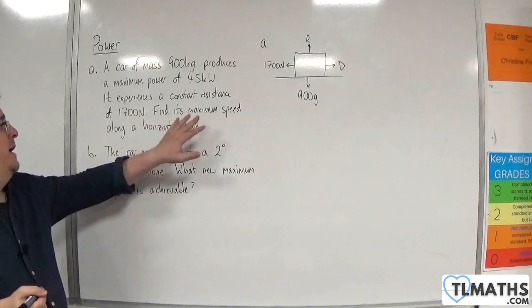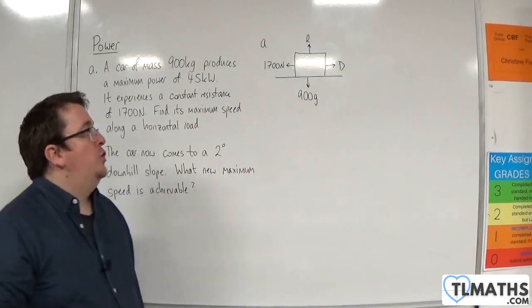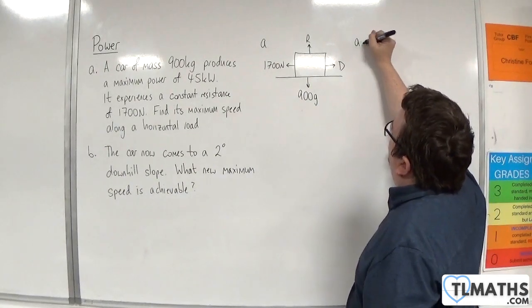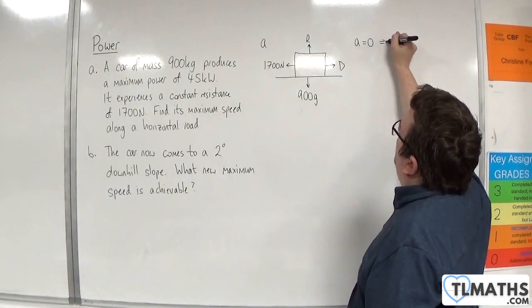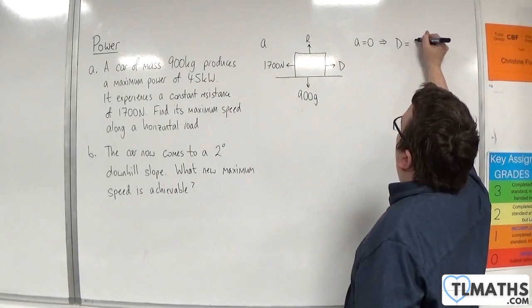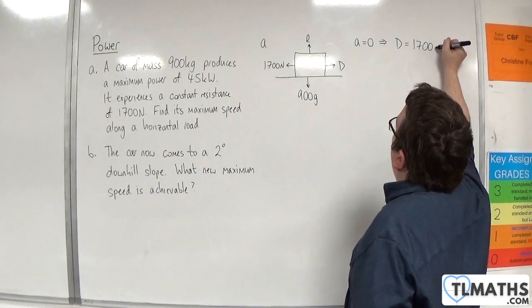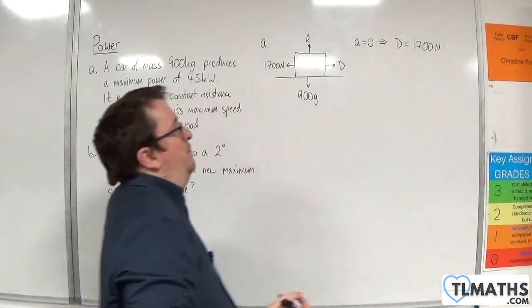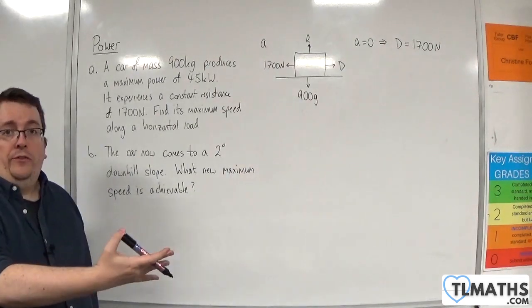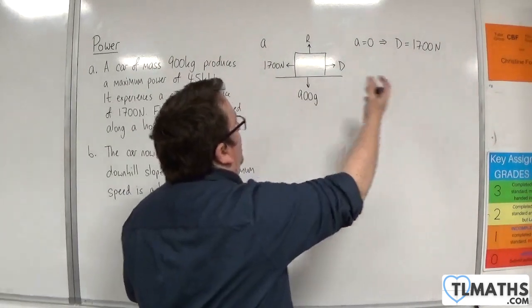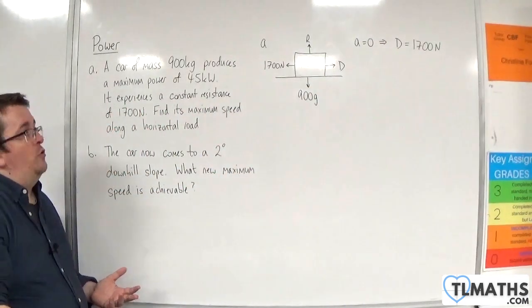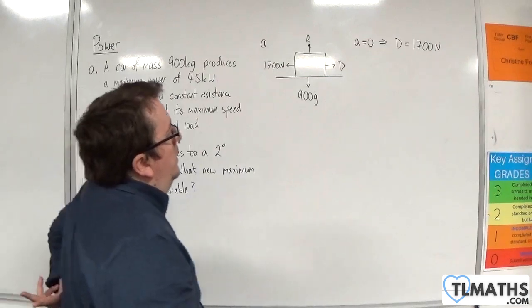To the left is the constant resistance of 1,700 newtons. Now, because we're looking at the maximum speed, the acceleration is going to be zero. And that's going to imply that D is equal to 1,700 newtons, because using Newton's second law F equals MA, D take away 1,700 must equal the mass 900 times acceleration zero.